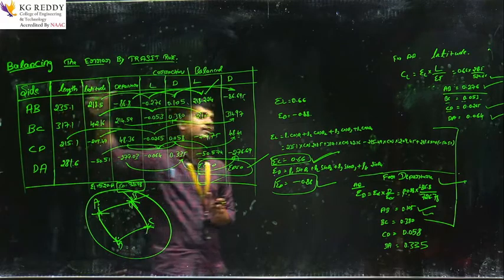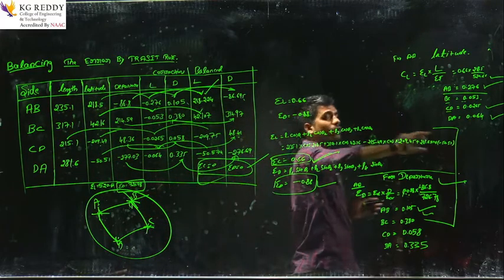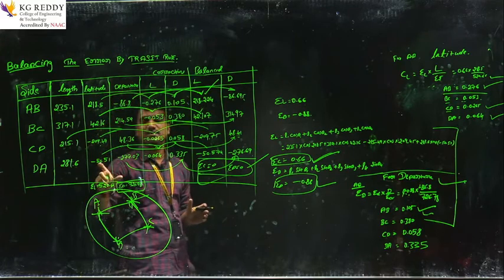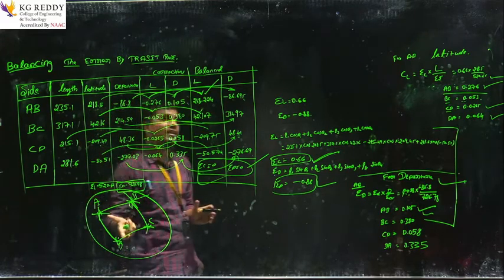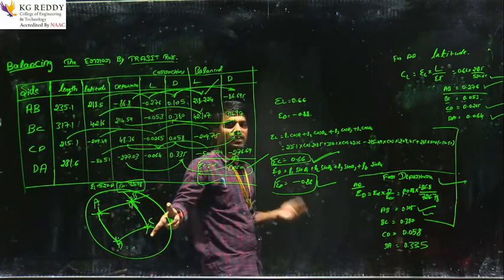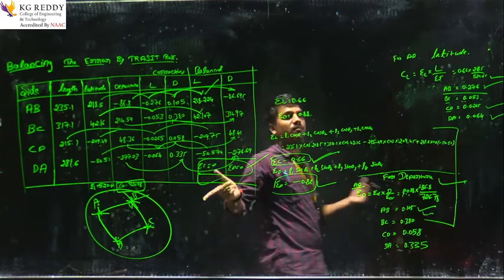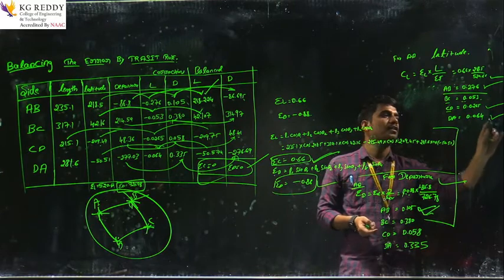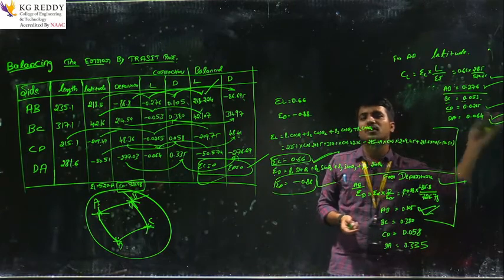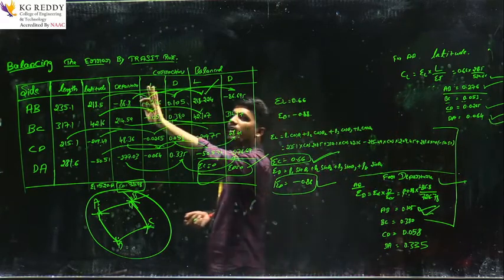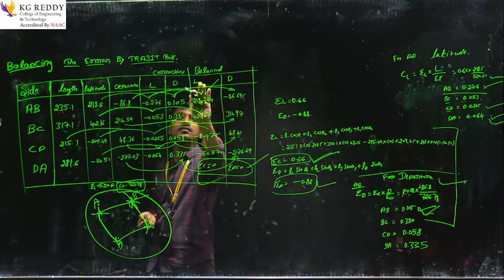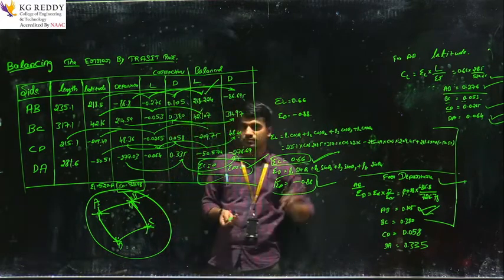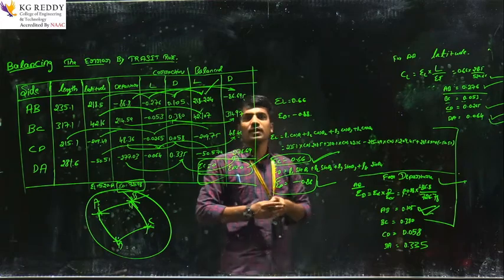These are the four steps to be considered for balancing of latitude and departure with corrections. The key point is that the length of the lines and departure of the lines should be written in mathematical equations, and errors should be handled as positive or negative accordingly — both considered for correction of length and departure. I hope this is clear. Thank you all.